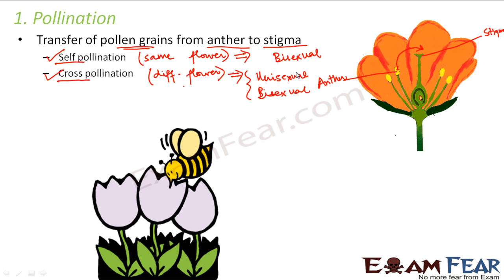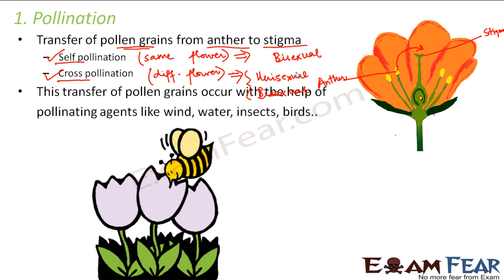The question is: how will the pollen grains get transferred, and who will carry them? This transfer occurs with the help of pollinating agents — objects that carry pollen grains from anther to stigma. Examples of pollinating agents are wind, water, insects, and birds. Bees, for instance, are attracted by the colorful petals of flowers, and when they reach a flower they carry pollen grains to the stigma of the same or another flower. Wind can also shift pollen grains from anther to stigma.